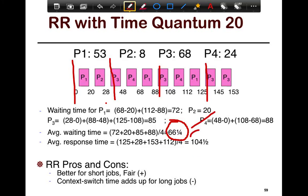If you look at the average response time, similarly, it's 104 and a half. So, average response time is you look at when each process started up. So, for example, the first process starts up at 0, and then it starts up again at 68, and then again at 112, and so,